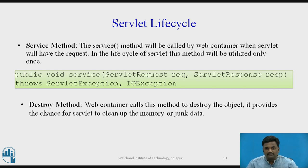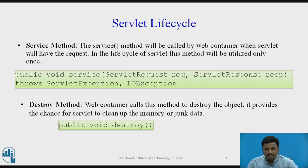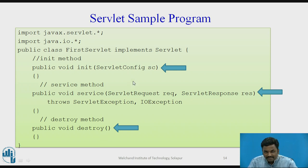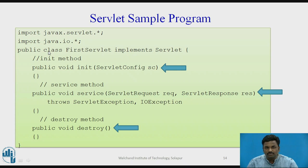Then the destroy method: as an object is created, it has to be destroyed. The destroy method is simply public void destroy(). Now, how the sample servlet program looks: public class FirstServlet implements Servlet — with these three methods. Init has one parameter ServletConfig; service has two parameters, ServletRequest and Response; and third is destroy. This is the standard architecture for any servlet program. Key imports are: import javax.servlet.* and import java.io.*.